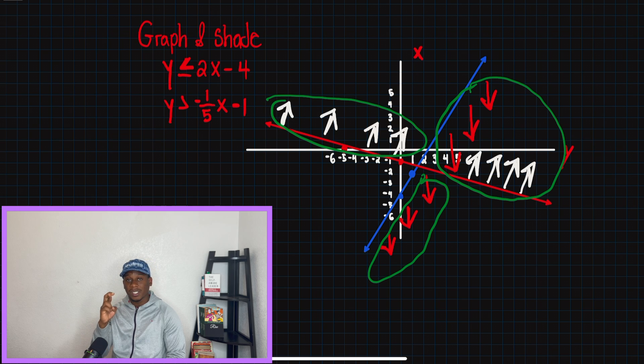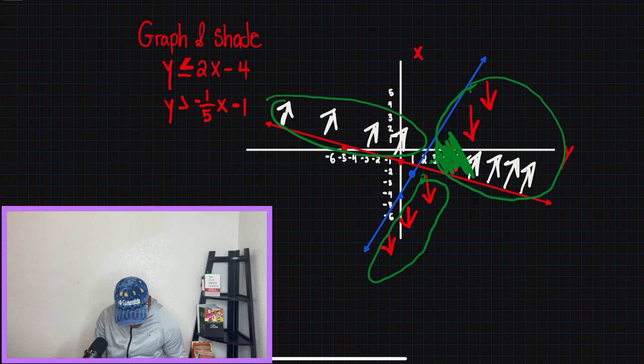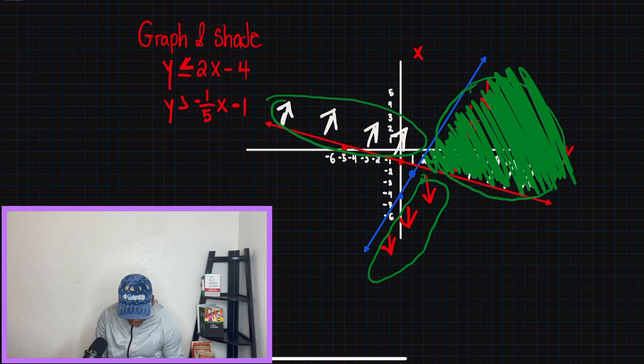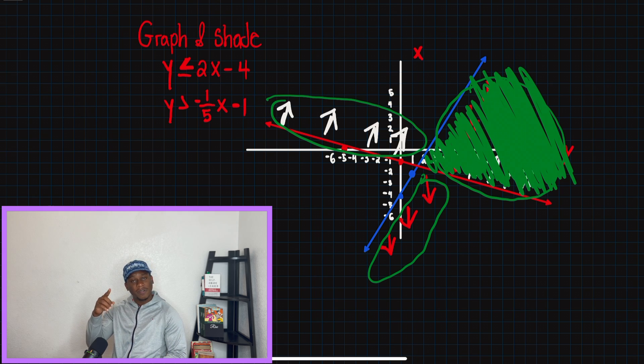And this is what we want, because that section right there, that is the solution set to the system of equations. That's the shaded region we were looking for. So if we were shading in this graph, we would shade only this part right here, because this is the only part that satisfies both of these sections compared to the other two, where it's only satisfying one of the systems of inequalities.